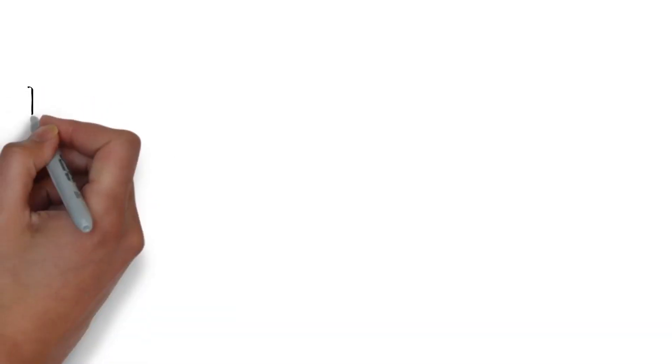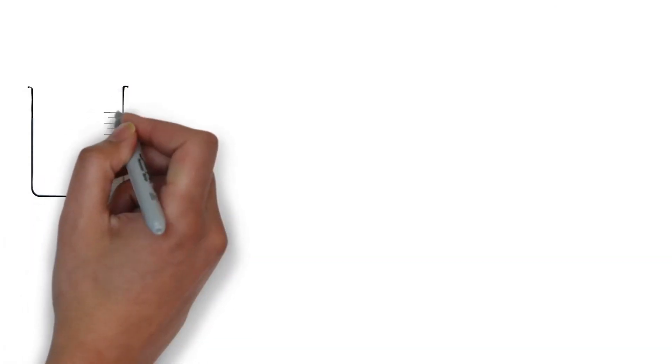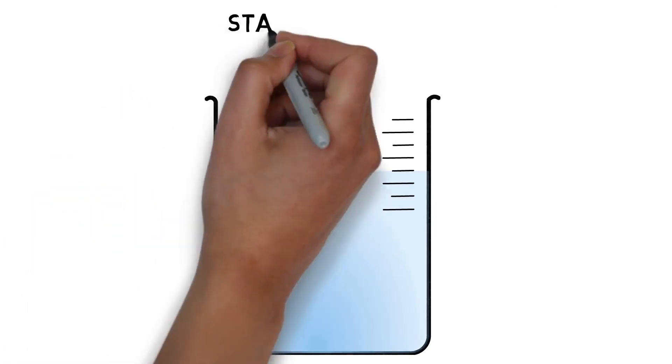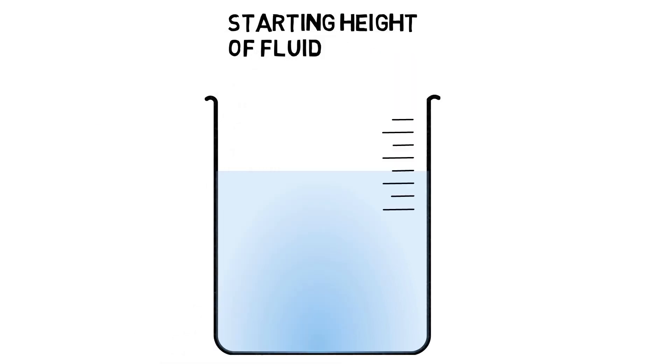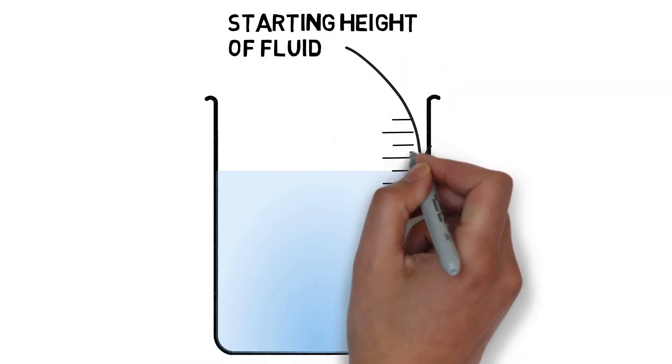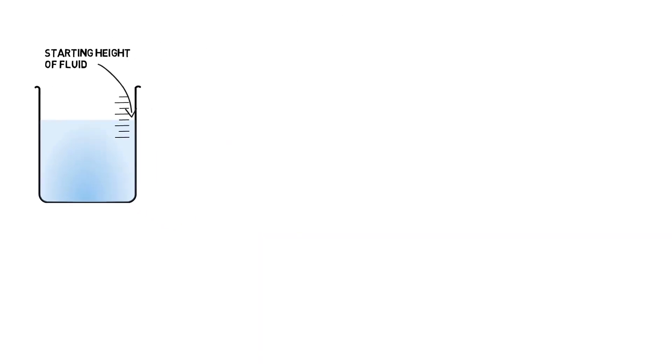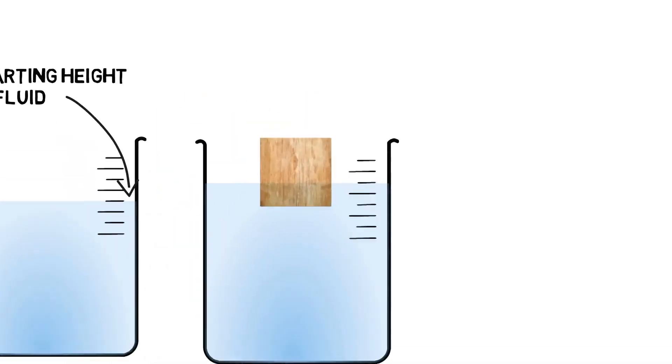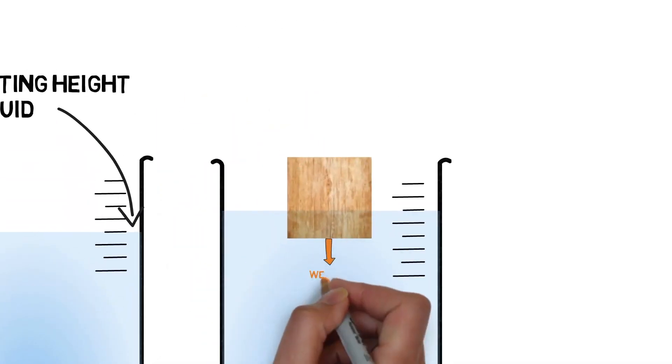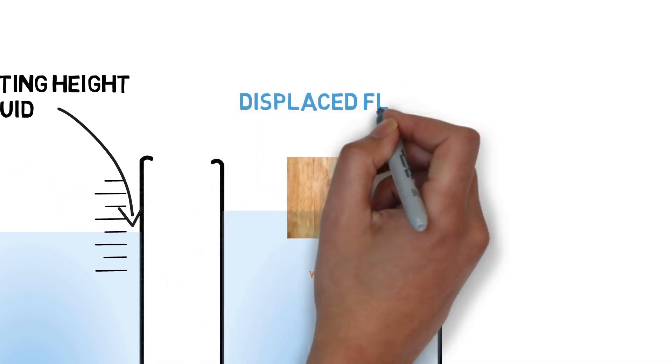Let's look in more detail at how to tell whether an object will float or sink. Take note of the starting height of this fluid. Let's see what happens when we drop an object into the fluid. As the object sinks down into the fluid, the fluid rises. We call this displaced fluid.